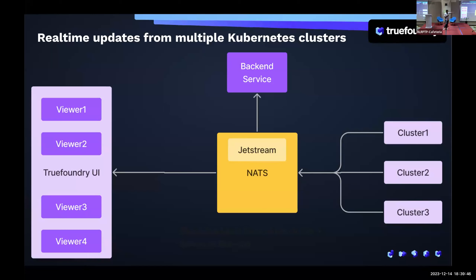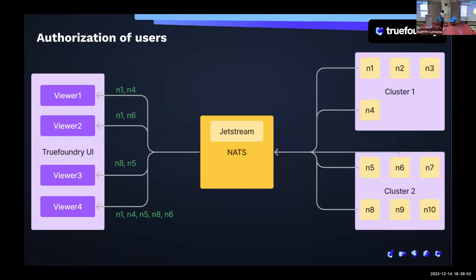The UI subscribes to NATS to figure out which events it's supposed to show to what viewers. This is the authorization part — one cluster will have multiple namespaces. We allow authorization at the unit level of a namespace, which is also what Kubernetes RBAC is based on. Users have access to specific namespaces, and we need to be very careful that you can't see any events from any other namespace. This uses NATS stream with NATS authorization tokens, which is quite complicated. The authorization behind NATS is extremely complicated — we had to tweak around it to get fine-grained JWT tokens that allow access to very specific resources.